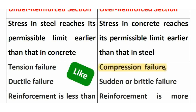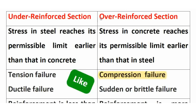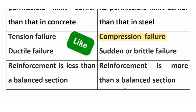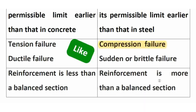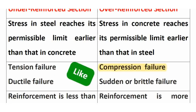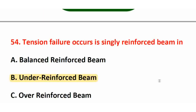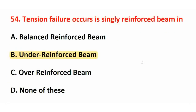Some questions ask about primary compression failure or secondary compression failure. Over reinforced section gives primary compression failure — sudden or brittle failure — with no warning. For under reinforced section, reinforcement is less than balanced. For over reinforced section, reinforcement is more than balanced. So tension failure in a singly reinforced beam occurs in the under reinforced beam section.